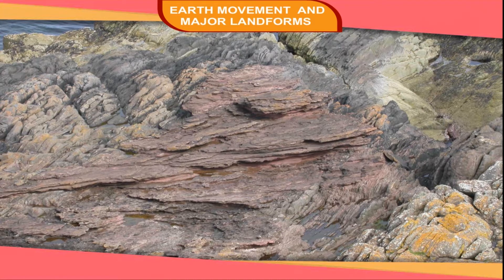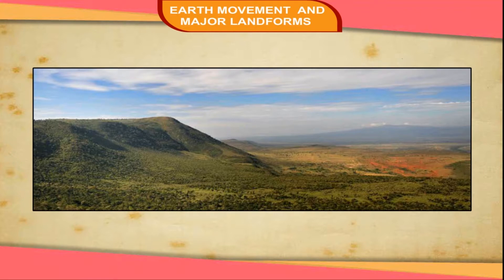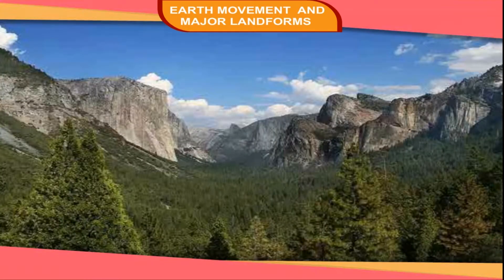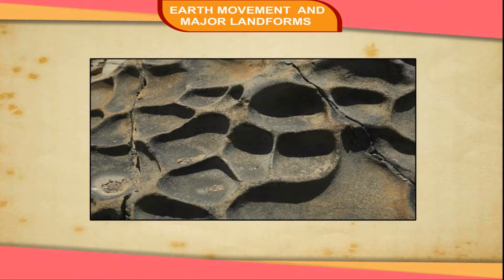Forces of Tension. These forces operate in opposite directions, thus causing a fault or fracture in the Earth's crust. The fractured rock strata either slides upwards or downwards along the fault line. The faulting then gives birth to new relief features like the rift valley or a block mountain. If a block of land subsides between two parallel faults, a trench is thus created, which is known as a rift valley.